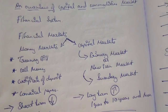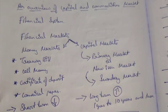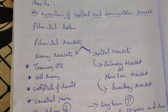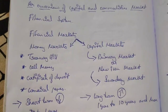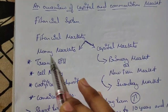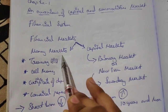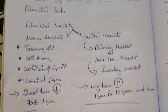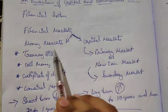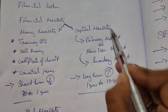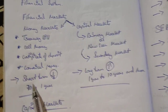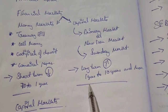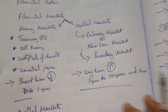This financial market deals with the transfer of things like shares, debentures, call money, and certificates of deposit. Financial markets are divided into two: money market and capital market. Money market is for short term, capital market is for long term. Short term means up to one year; capital market covers one year to ten years and more.